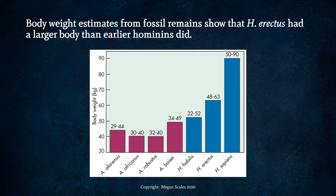Body weight estimates show that Homo erectus had a larger body than earlier hominins. We see earlier hominins of the Australopithecus genus, then once we get to Homo habilis a little bit of an increase, but Homo erectus and Homo sapiens show even further body weight increases.